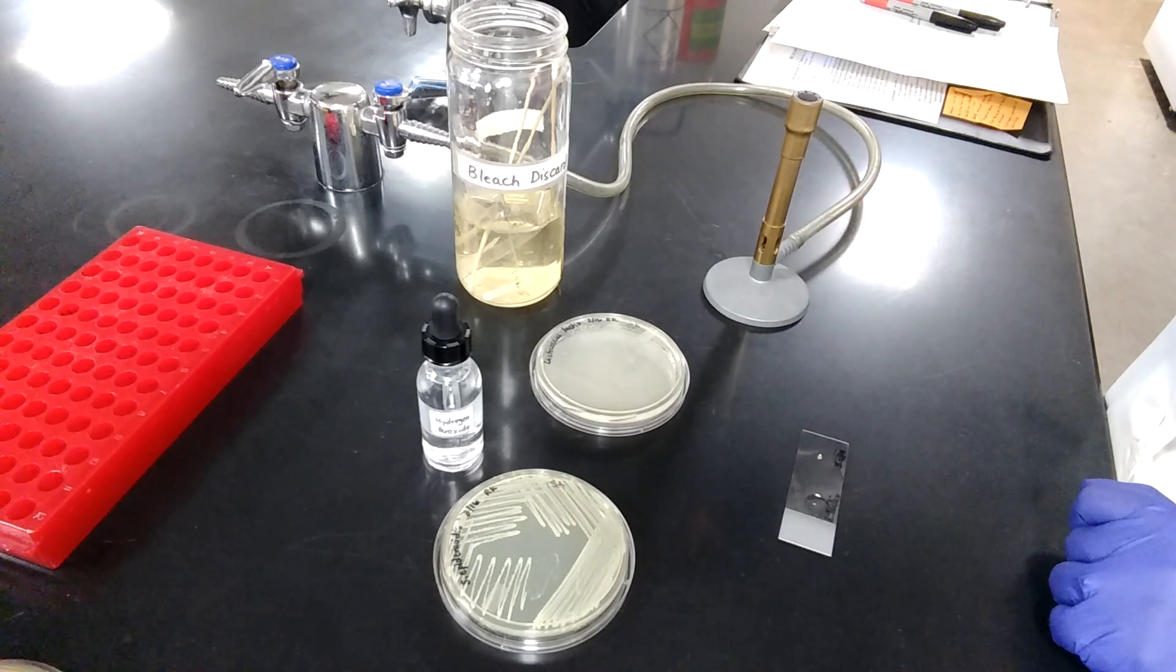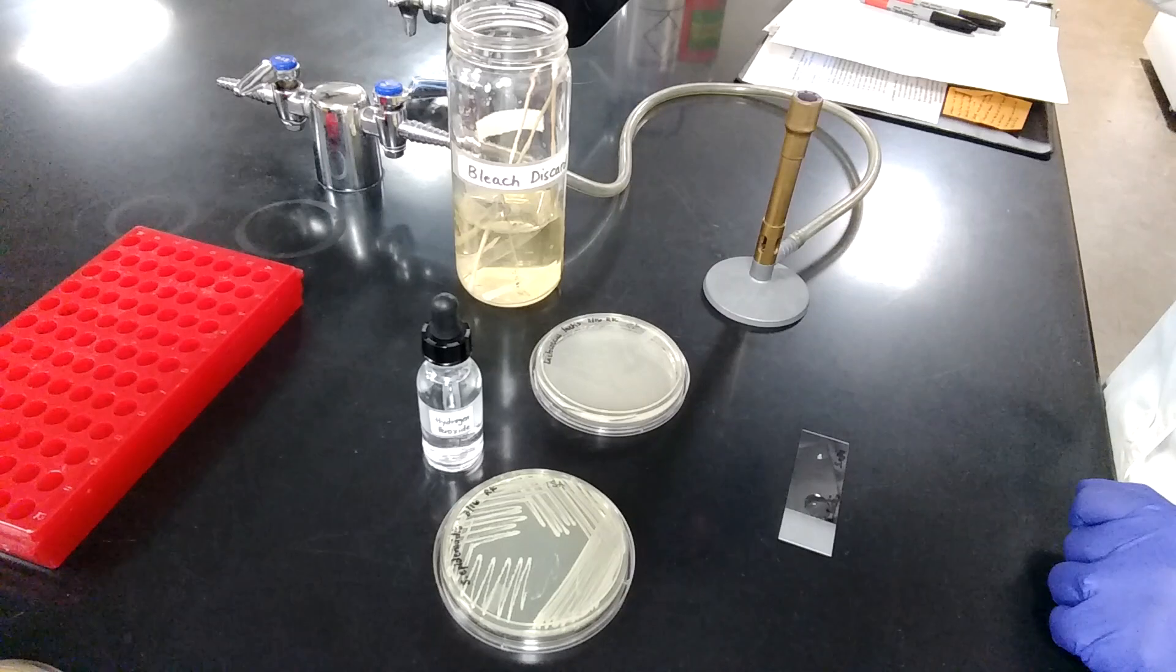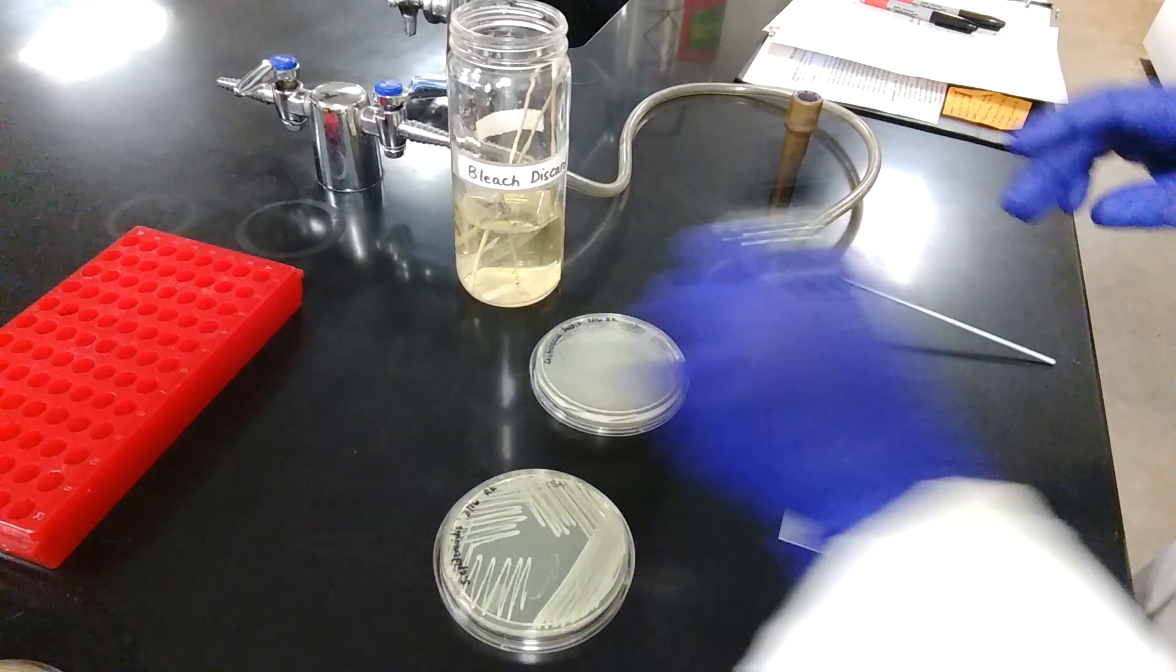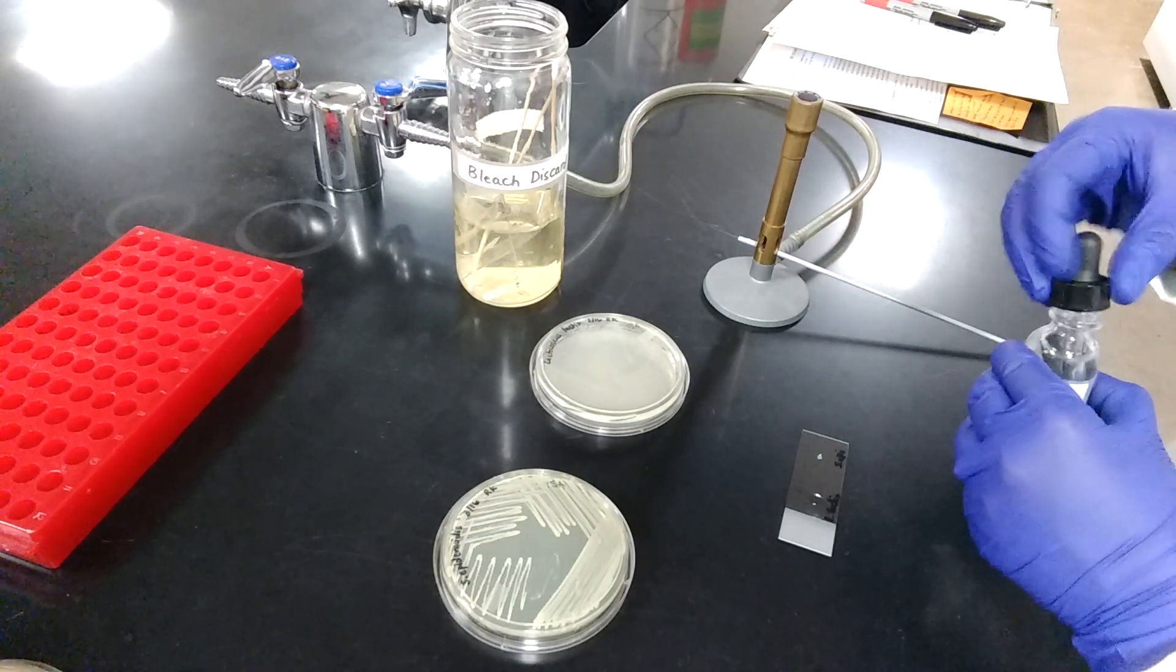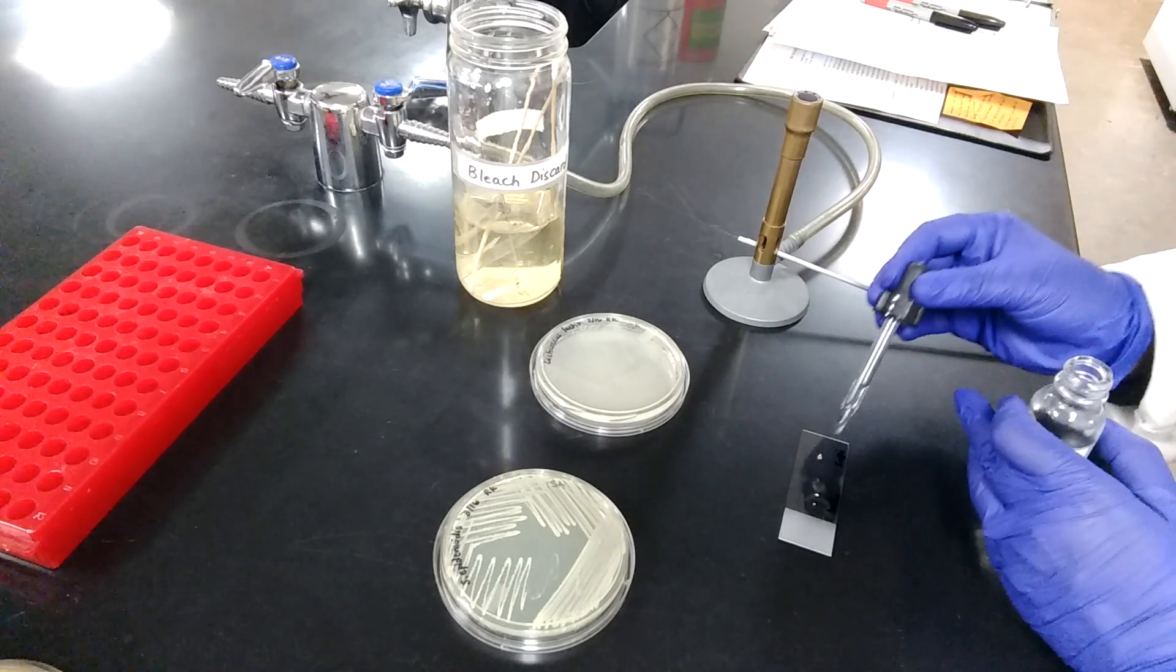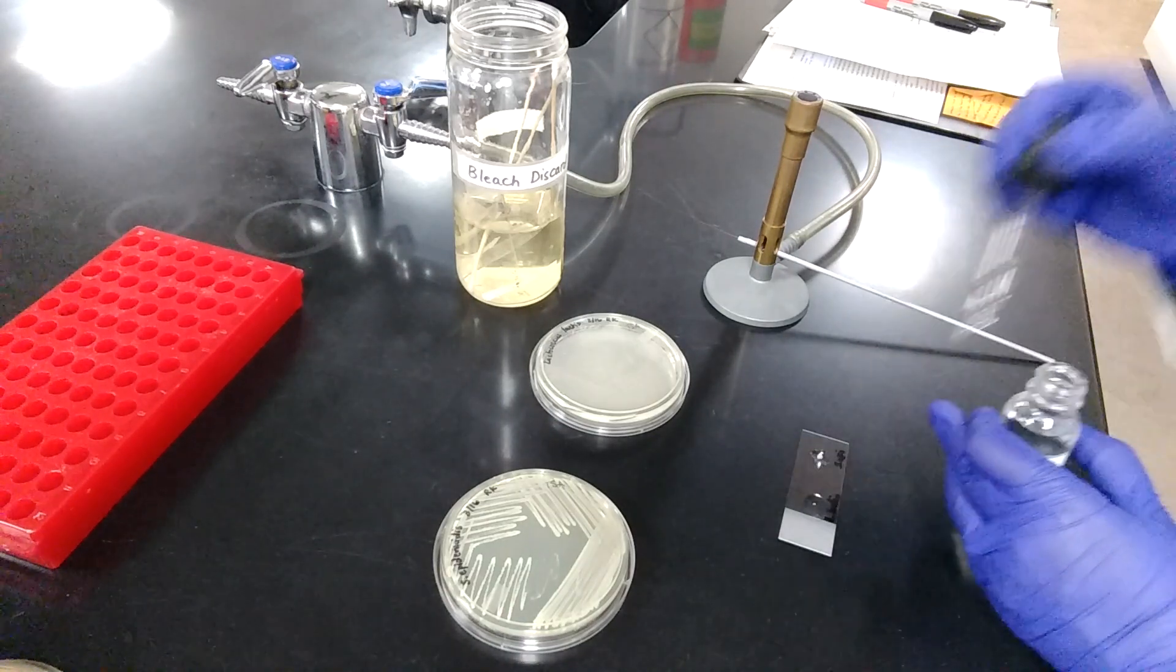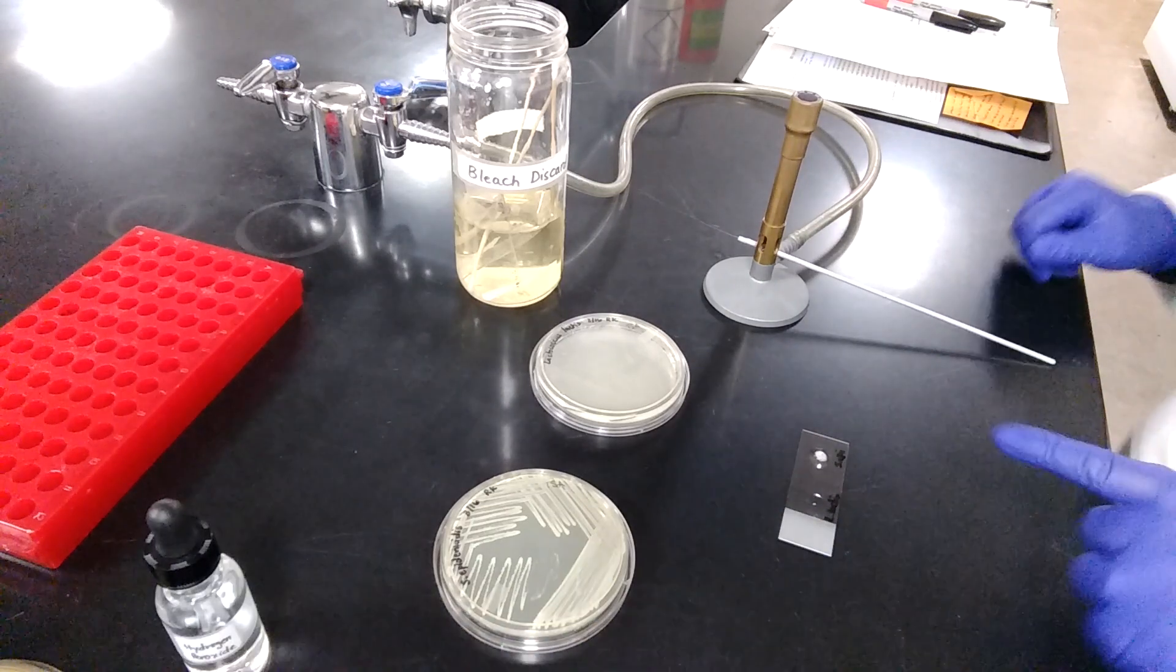Sterilize the inoculating loop and put it away safely. Then add a drop of hydrogen peroxide onto the bacterial mass. Immediately, look for formation of bubbles.